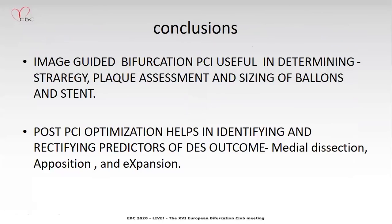Image-guided bifurcation PCI is useful in determining strategy — whether to use a single-stent or two-stent approach based on side branch assessment. You can assess the plaque type — calcified, lipid, or fibrous — and decide the appropriate plaque modification strategy. Balloon and stent sizing can be decided based on OCT imaging. Post-PCI optimization helps identify and rectify predictors of poor DES outcome: medial dissection at proximal or distal edges, malapposition, and whether the stent is adequately expanded.